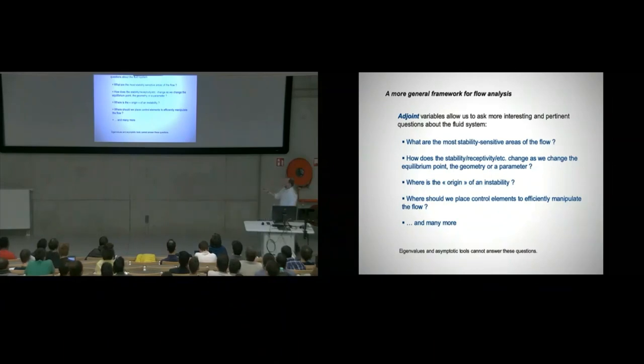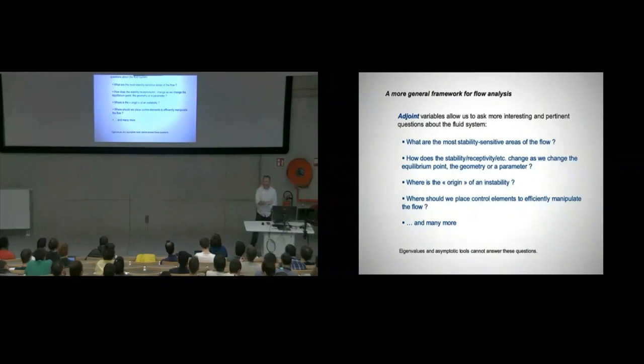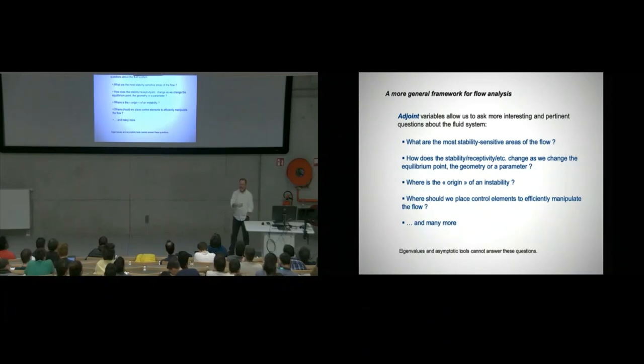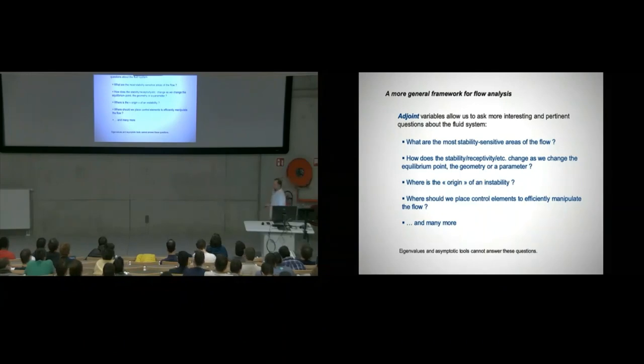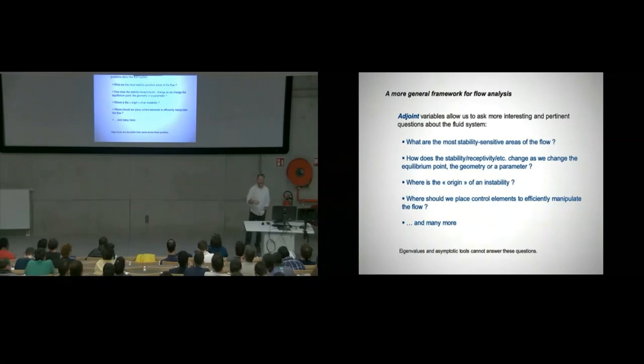Another question that often comes up is if you have an instability and you actually see the mode that grows the most, where the mode grows the most is not probably where it came from. It came from somewhere else and by the time it grew to high amplitude, it already moved away from the origin of where it started. This technique with the sensitivity actually can tell us where the origin of an instability is. If I want to kill that instability, where should I kill it when it's still small? Where can I suffocate it while it's still developing? For control purposes, this is very important information.